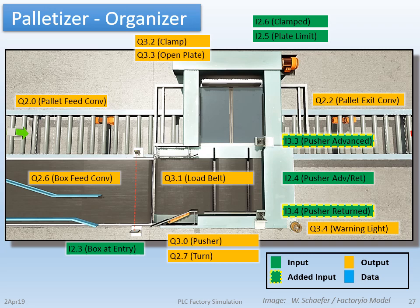If we look at the top view of the elevator, we see that it is essentially the box organizer. Along with the standard supplied inputs, I also added pusher advanced and pusher returned. There is one input for clamped and another for plate at the advanced or returned limit. There's one retroreflective sensor to detect objects just before they enter the elevator pushing area. These are single solenoid type outputs used to advance the clamp and return the plates, advance the turn arm, and to advance the pusher. When they are off, all the cylinders can be considered to be home or in the return position. Outputs also control the pallet feed and exit conveyors, the box feed and load belts. The warning light automatically turns on when the elevator is in motion.